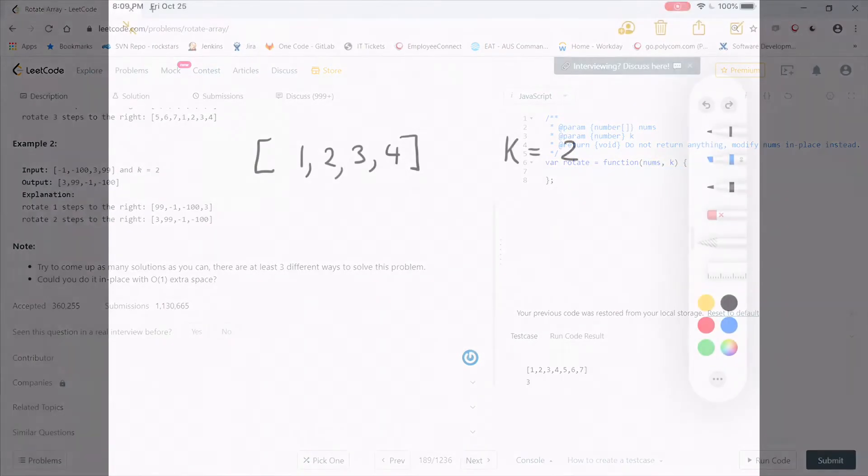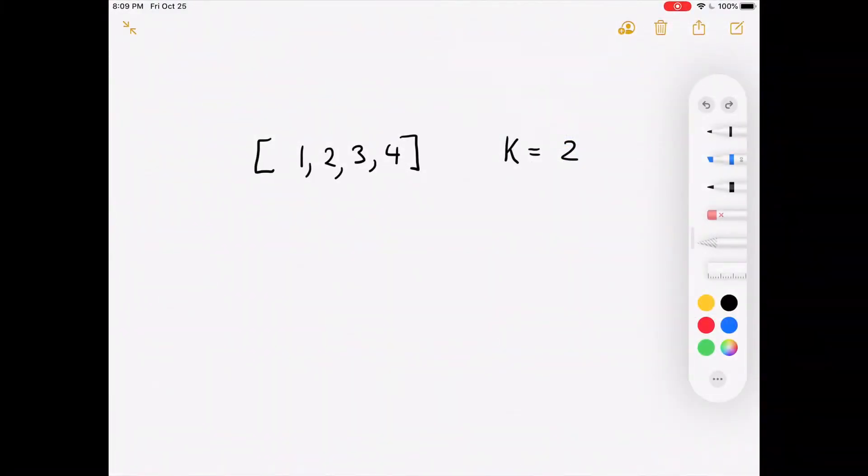Alright, one of the ways to solve this problem is just by popping the last element off of the array and then unshifting it to the front of the array. And we would just do that k number of times.